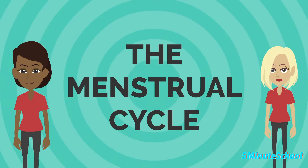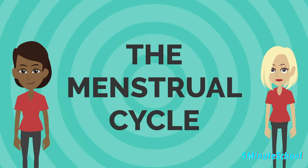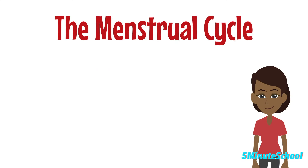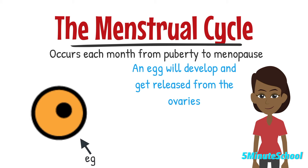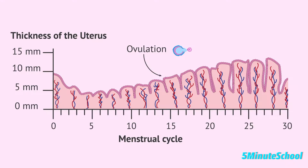Each month from puberty until menopause, a woman undergoes a menstrual cycle. This is a hormone-driven cycle where an egg develops and is released from the ovaries. The lining of the uterus builds up, and if pregnancy doesn't happen, the uterine lining sheds during the menstrual period, and then the cycle starts again.